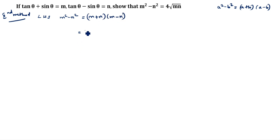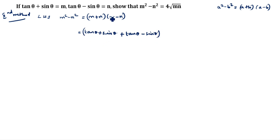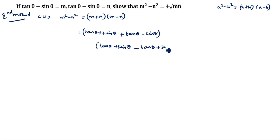m + n: m is tan θ + sin θ, and n is tan θ - sin θ. So m + n = (tan θ + sin θ) + (tan θ - sin θ) = 2 tan θ. And m - n = (tan θ + sin θ) - (tan θ - sin θ): sin θ terms cancel and tan θ terms simplify to give 2 sin θ.